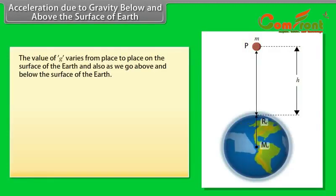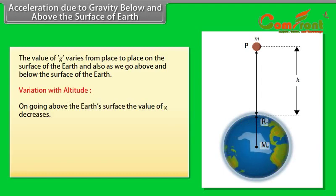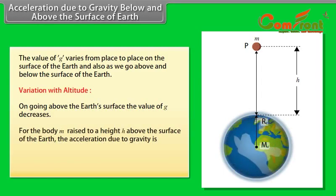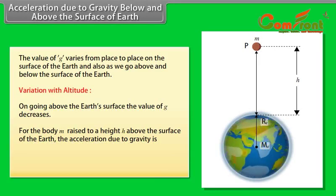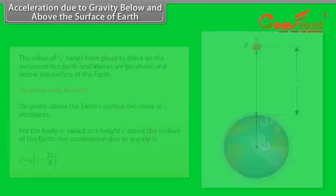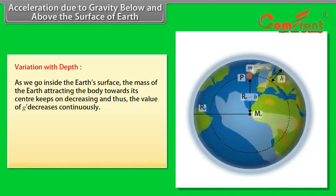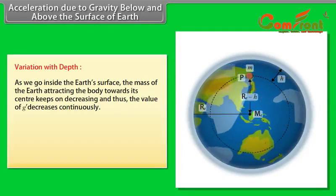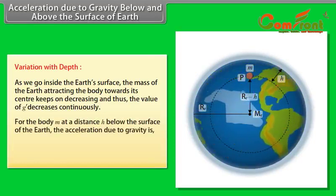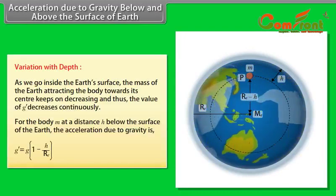Acceleration due to gravity below and above the surface of earth. The value of g varies from place to place on the surface of the earth and also as we go above and below the surface of the earth. Variation with altitude: On going above the earth's surface, the value of g decreases. For the body M raised to a height H above the surface of the earth, the acceleration due to gravity is given by g dash is equal to g multiply by 1 minus 2H upon R. Variation with depth: As we go inside the earth's surface, the mass of the earth attracting the body towards its center keeps on decreasing and thus the value of g decreases continuously. For the body M at a distance H below the surface of the earth, the acceleration due to gravity is g dash is equal to g multiply by 1 minus 2H upon RE.